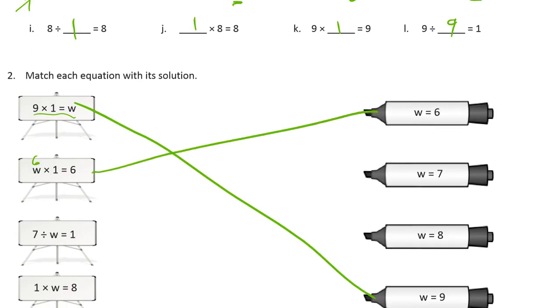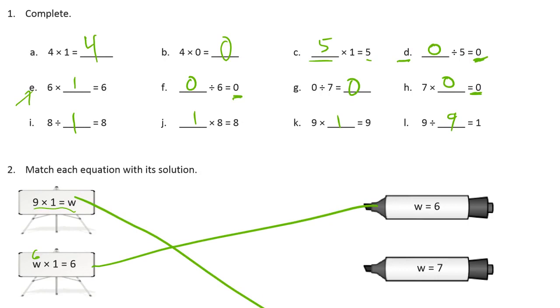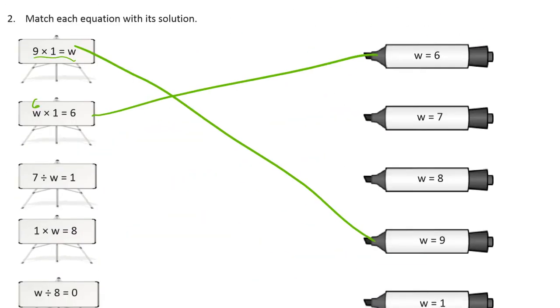7 times W equals 1. I don't think that one we're going to find up here. But 7 divided by something equals 1. Well, you can divide a number by itself, it will equal 1, because it takes 1 7 to make 7. So W would have to be 7 divided by 7 would equal 1 here.